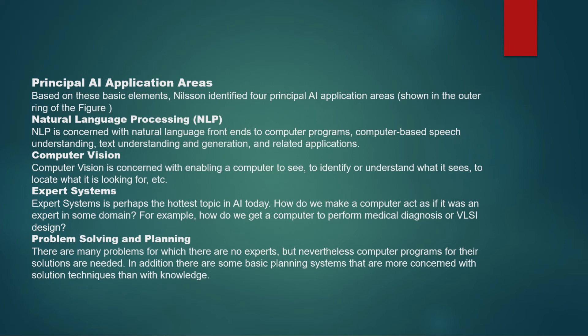Expert systems are systems which are expert in their own field. This is another of the hottest topics in AI research today. Basically it is about making a computer act like a human for a particular domain. For example, expert systems are used in medical diagnosis and in coal mining systems, and so on.